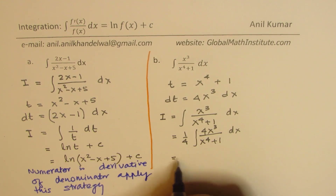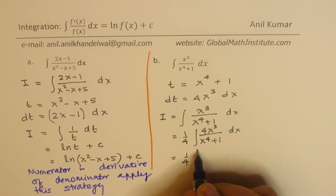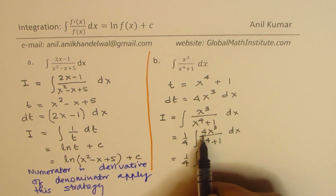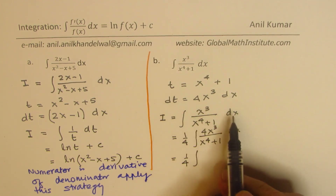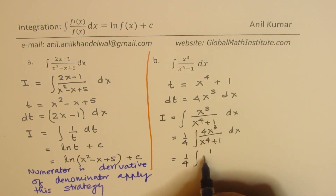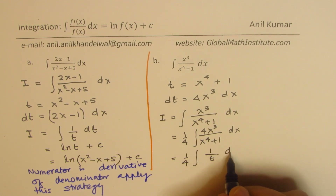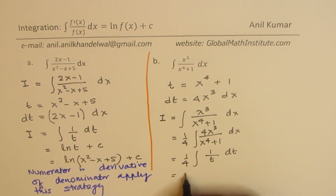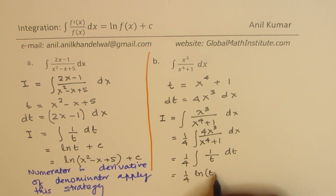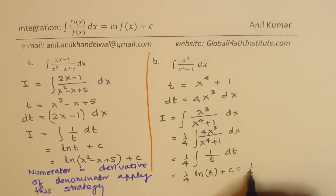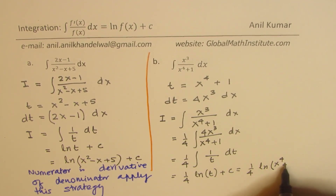Since 4x³ dx = dt, we can rewrite the integral as (1/4) times the integral of 4x³/(x⁴ + 1) dx. That becomes (1/4) times the integral of 1 over t dt, which gives (1/4) ln t + c — that is, (1/4) ln(x⁴ + 1) + c.